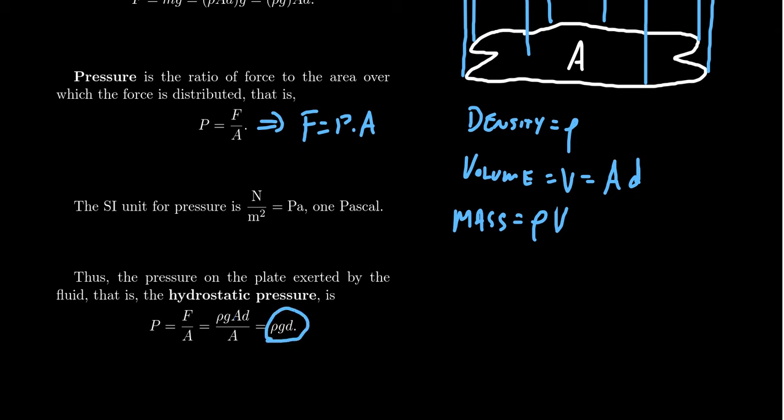So one thing I want to mention about this is that the hydrostatic pressure is completely independent of the shape of the object. It doesn't matter how our plate is shaped. The pressure is determined entirely by the depth. D is the variable here. ρ and g are constants that we'll see throughout.